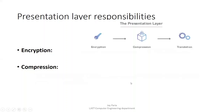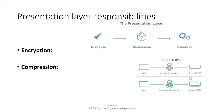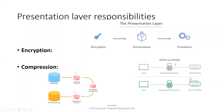The responsibility of the presentation layer is encryption, compression, and translation. When you see HTTP or HTTPS on a website, HTTP is insecure and HTTPS is secured. Compression means that if the size of a file is very large, you can compress it to reduce the data size, making it easier to send.